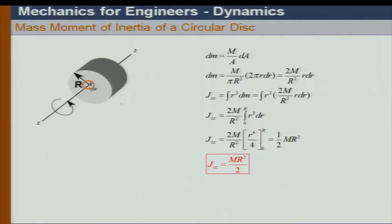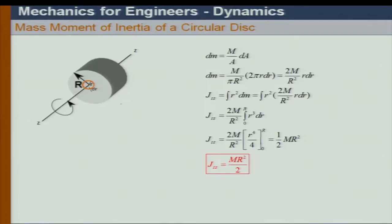We will now start the tutorial. For a disk, what is the mass moment of inertia about the center? It is half m r square — m r square over 2. I'm not deriving it, but if you look at the mass moment of inertia about the center, about the z-axis, since it is rotating, I have m r square over 2. Just note it down and then we can solve this problem.